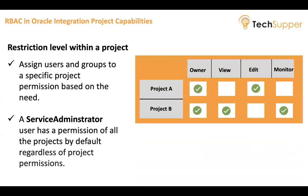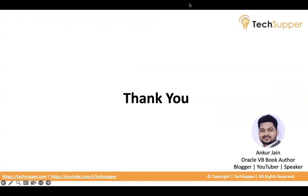Basically, this is how it works. You may have Project A and Project B, with responsibilities like owner, viewer, editor, and monitor. You can assign the owner permission to a set of users or groups, and similarly provide editor permission. When you give editor permission, those users can view as well. But if you give only view permission, they cannot do other things. A group with only view permission cannot edit or monitor anything. I hope you find this useful. Thank you.